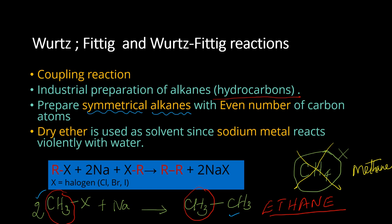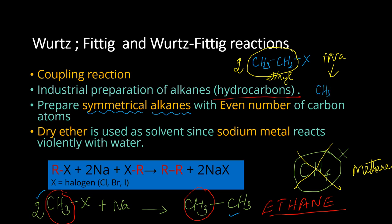Let's look at an example. Take CH3CH2X — that is an ethyl halide. When two ethyl halide molecules react with sodium metal, the product is CH3CH2-CH2CH3, which is n-butane. This is a symmetrical alkane because both halves of the molecule have the same number of carbon atoms and the same groups.